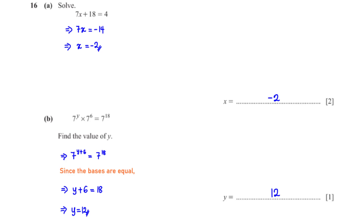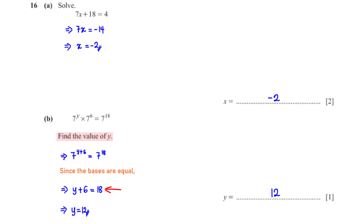7 raised to the power y times 7 raised to the power 6 equals 7 raised to the power 18. Find the value of y. Since the two terms on the left have the same base and are multiplying, their powers add, giving 7 to the power y plus 6. With equal bases on both sides, the powers must be equal, so y plus 6 equals 18. Subtracting 6 from both sides gives y equals 12.